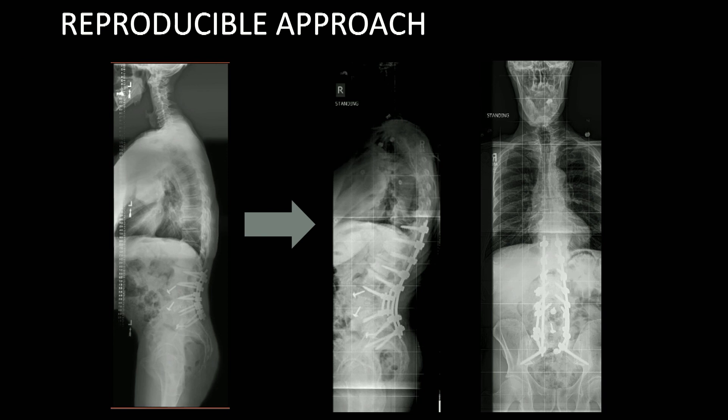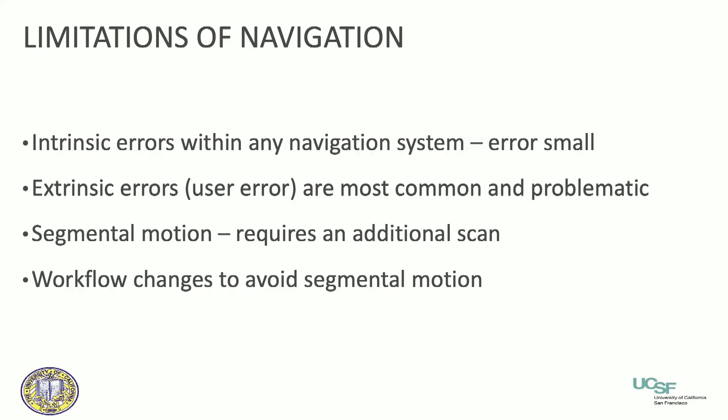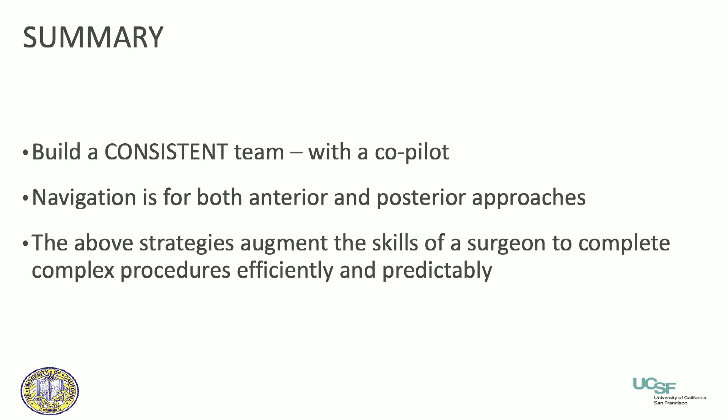This is just an example of how we can use navigation not only for putting in screws, but also for osteotomies, and hopefully that will translate into improved outcomes. There are limitations to navigation. Intrinsic errors, extrinsic errors — things we all need to think about every time we use it. Segmental motion, where if the spine moves when we're navigating, requires an additional scan — that's a technological thing that needs to be solved as time goes on. When embracing navigation, there are workflow changes. You need a co-pilot and a team that knows how to run this. You can't do it all on your own — build a consistent team.